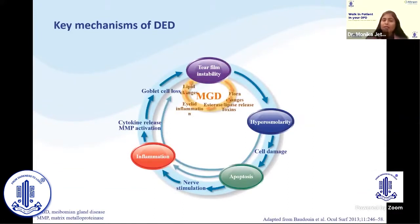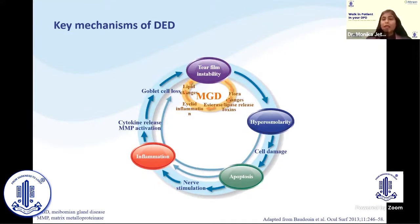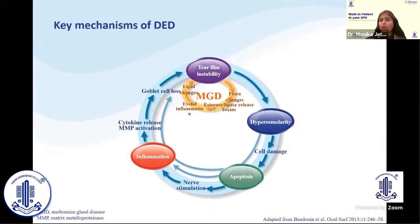The key mechanism in dry eye disease is how does osmolarity actually occur? We all know that tear film is made up of three layers: mucin, aqueous, and lipid. When the aqueous layer becomes less — when production is less or evaporation is more — the solutes in the tear film increase, leading to hyperosmolarity, which causes damage to the corneal epithelial cells.